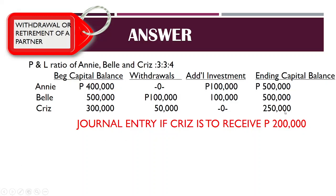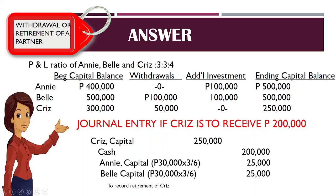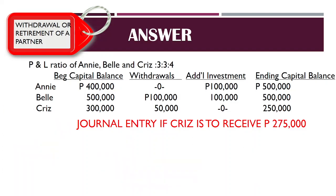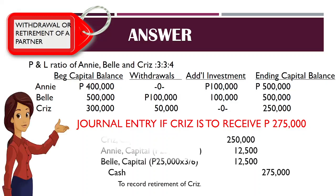Since Chris receives $200,000, which is less than her book value of $250,000, this is the case where the withdrawing partner receives less than her book value. And the last case, wherein Chris will receive $275,000, which is more than her book value, requires the following journal entry.